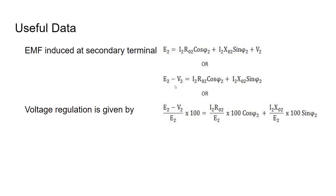So, E2 minus V2 — this voltage difference, the impedance drop — is given as I2 × R02 × cos φ2 + I2 × X02 × sin φ2. The voltage regulation is given as (E2 − V2) / E2 × 100, which equals the percentage resistance drop × cos φ2 plus the percentage reactance drop × sin φ2. Here φ2 is the load angle.